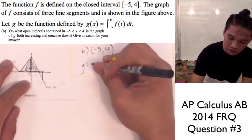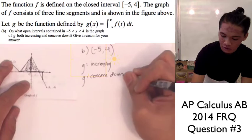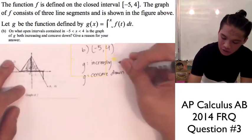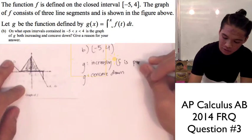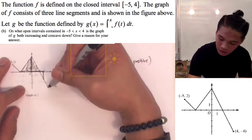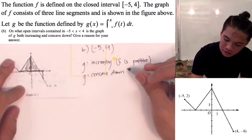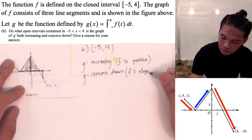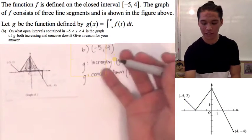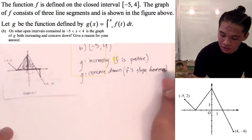Using the graph of f, we know that g is going to be increasing whenever f is positive, and g will be concave down whenever the graph of f's slope is negative. So we need f to be positive and f's slope to be negative.